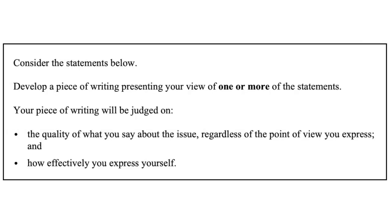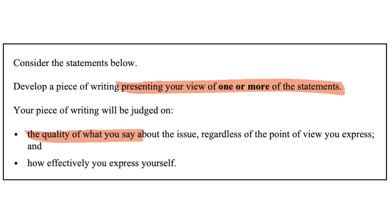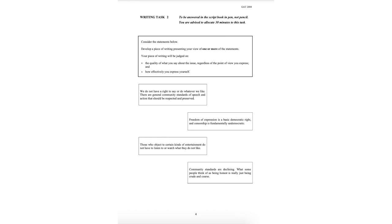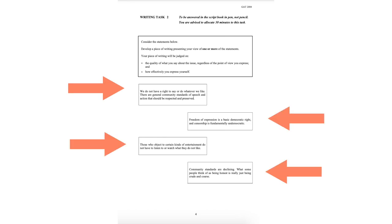Basically, task two of your GAT is a persuasive task. It says it's presenting your point of view for one or more statements. Your piece of writing will be judged on the quality of what you say about the issue regardless of the point of view you express. That's important because it gives you confidence that you can say what you want, as long as you back it up and express yourself effectively.